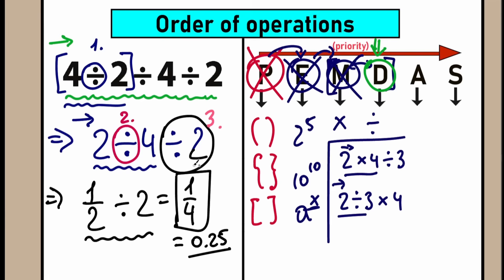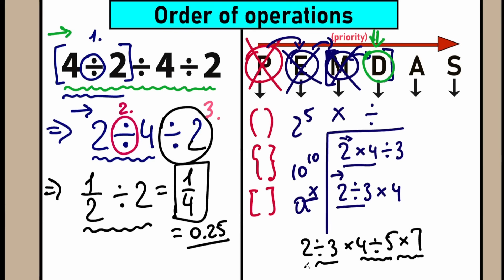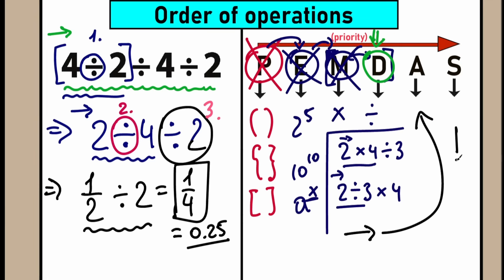I really hope you understand that we can't jump or do whatever we want. For example, if we have an expression like 2 divided by 3 times 4 divided by 5 times 7 — we have a mixture of multiplication and division. As I said, we can't jump and say 'I want to divide 4 by 5 first, then multiply by 7, then divide by 3.' That is a very chaotic and random method. You just need to perform it in a strict order from left to right. A lot of calculators work according to PEMDAS, so it's really important to get the correct answer.